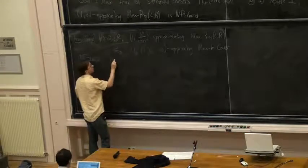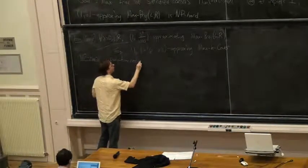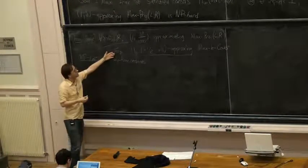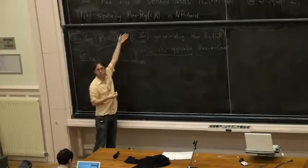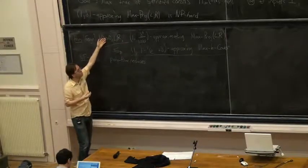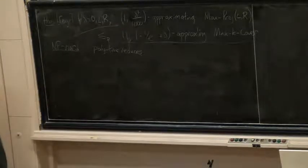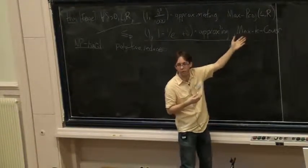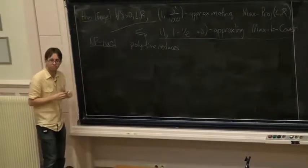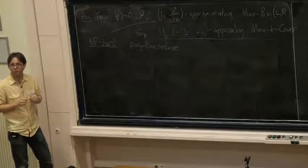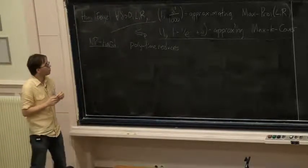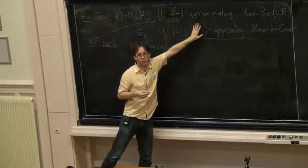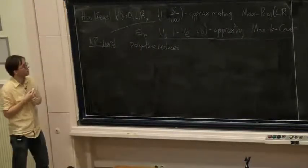This NP-hardness means Max Projection poly-time reduces to Max K-Cover, so we deduce that Max K-Cover is also hard. This is our goal. By the way, this is an optimal result in the sense that the greedy algorithm achieves exactly (1 − 1/e) without the delta, so doing anything better than the greedy algorithm is NP-hard.